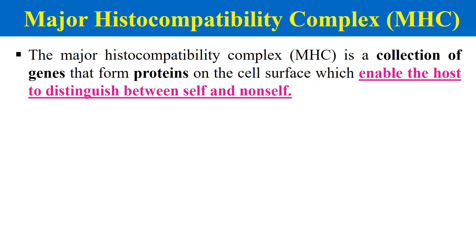First of all, we should know what is major histocompatibility complex or MHC. MHC is a collection of genes which form proteins that are generally expressed on the surface of cells. These proteins help the immune system to differentiate between self and non-self cells. Due to the presence of MHC molecules, our immune system can recognize its own cells, because own cells contain MHC that is specific to a particular individual.